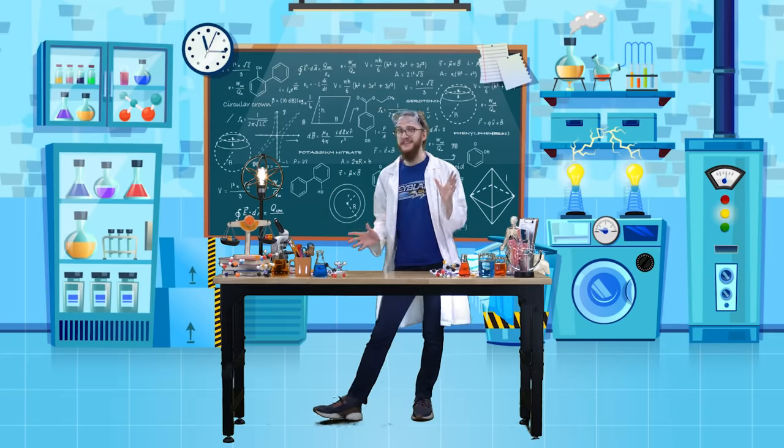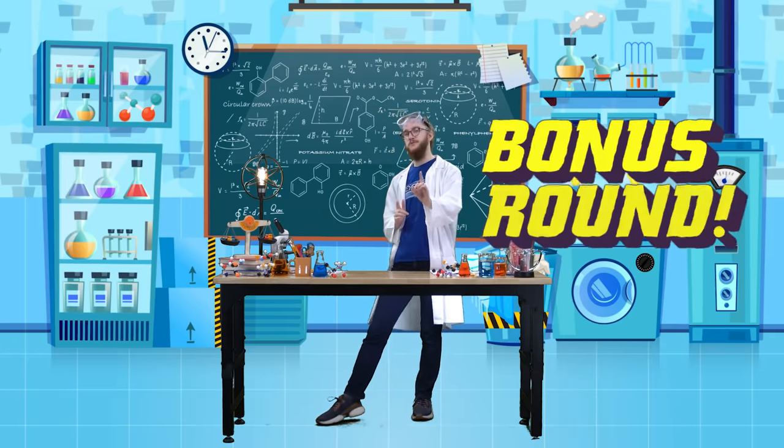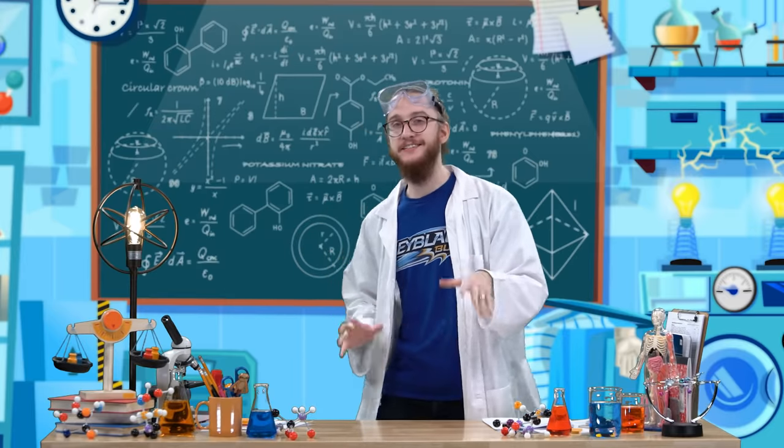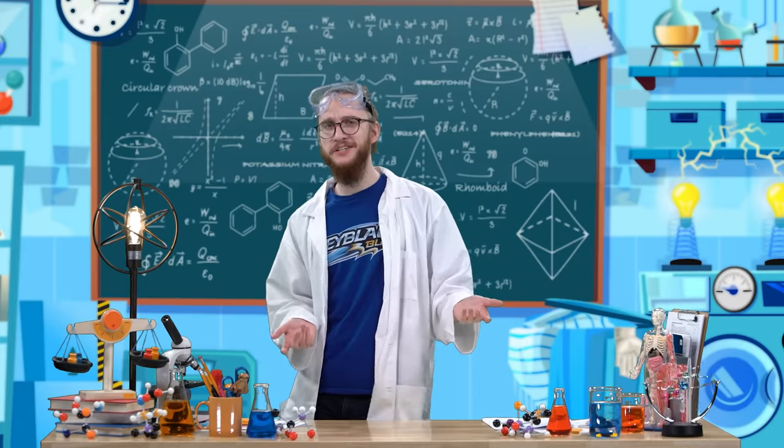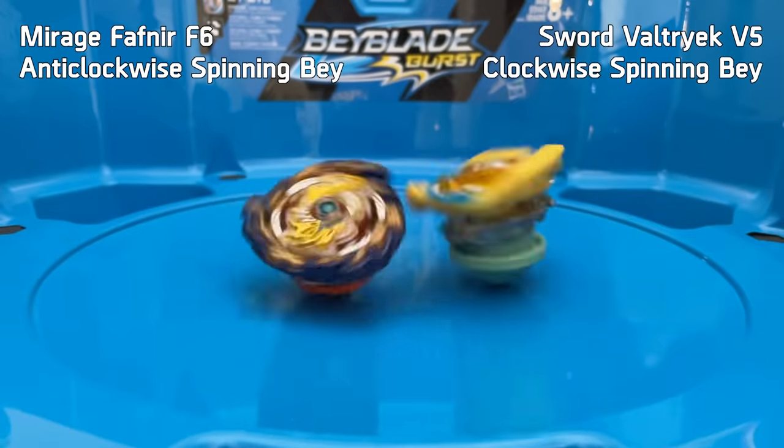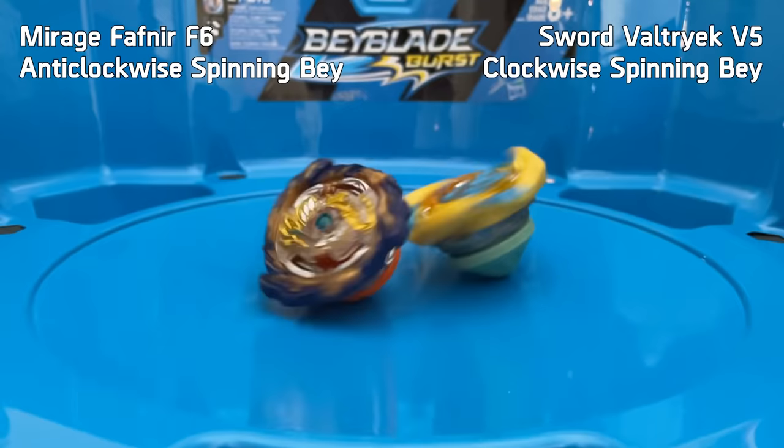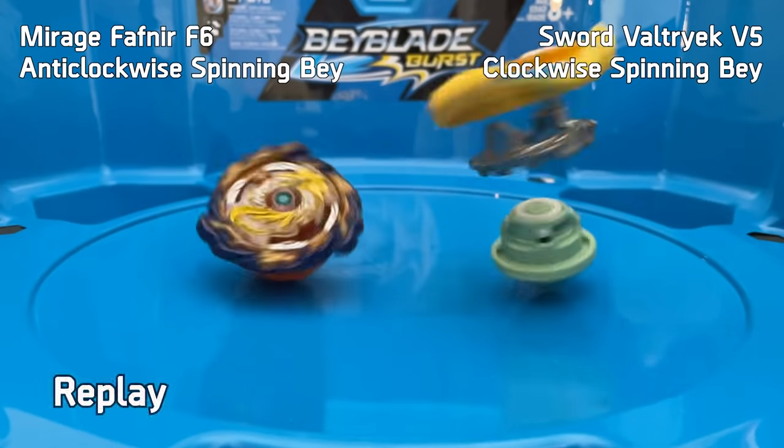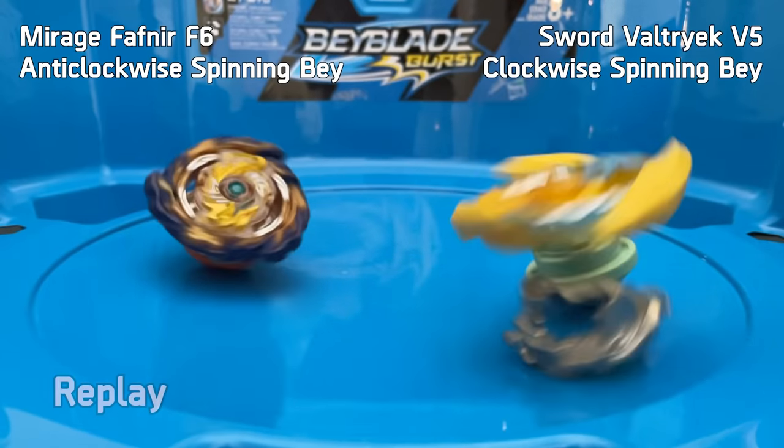Speaking of Fafnir, we have a bonus round. Another facet of inertia is the Slow Mo Burst. How's that related to inertia? I'll show you. First, what is it? When an anti-clockwise spinning Beyblade slows down and receives an attack from a clockwise spinning opponent, it can sometimes burst that opponent. Hold on, how does that work?